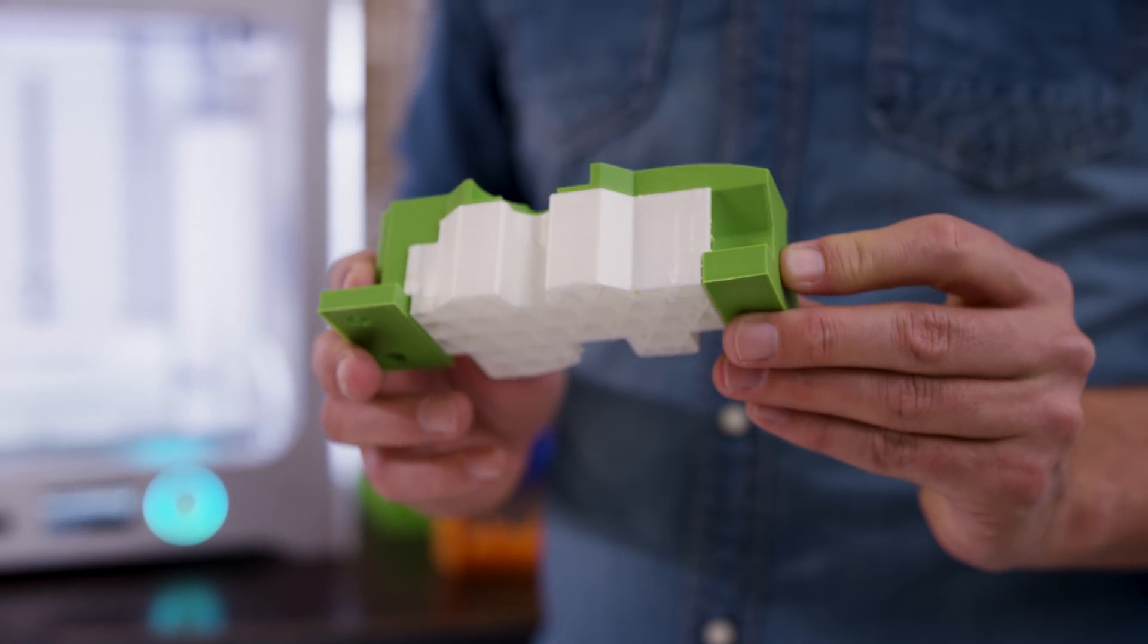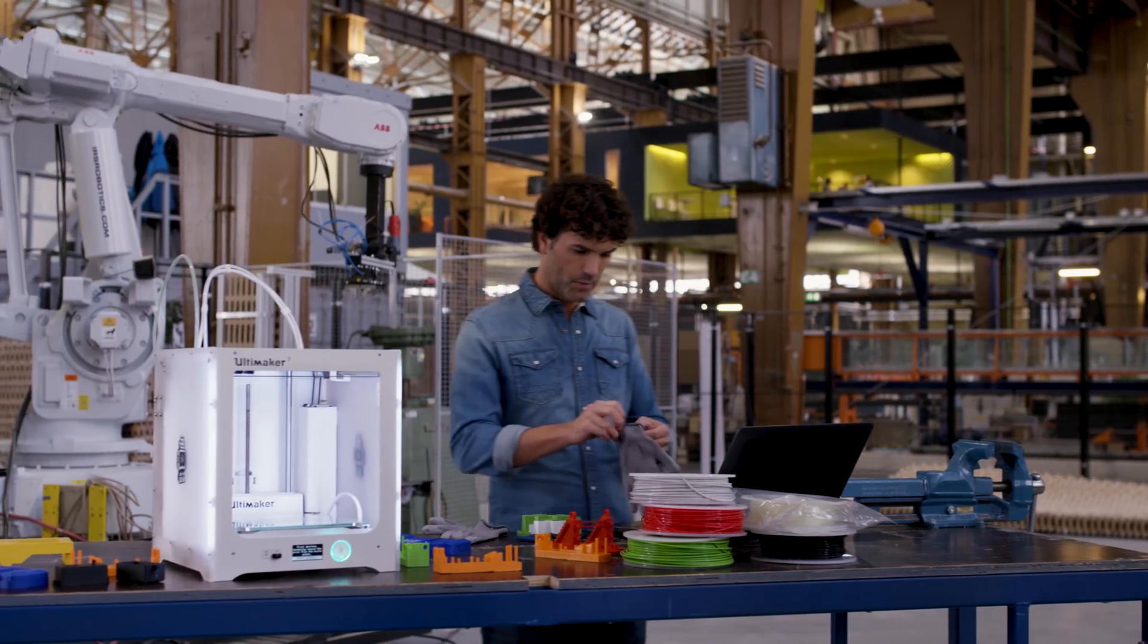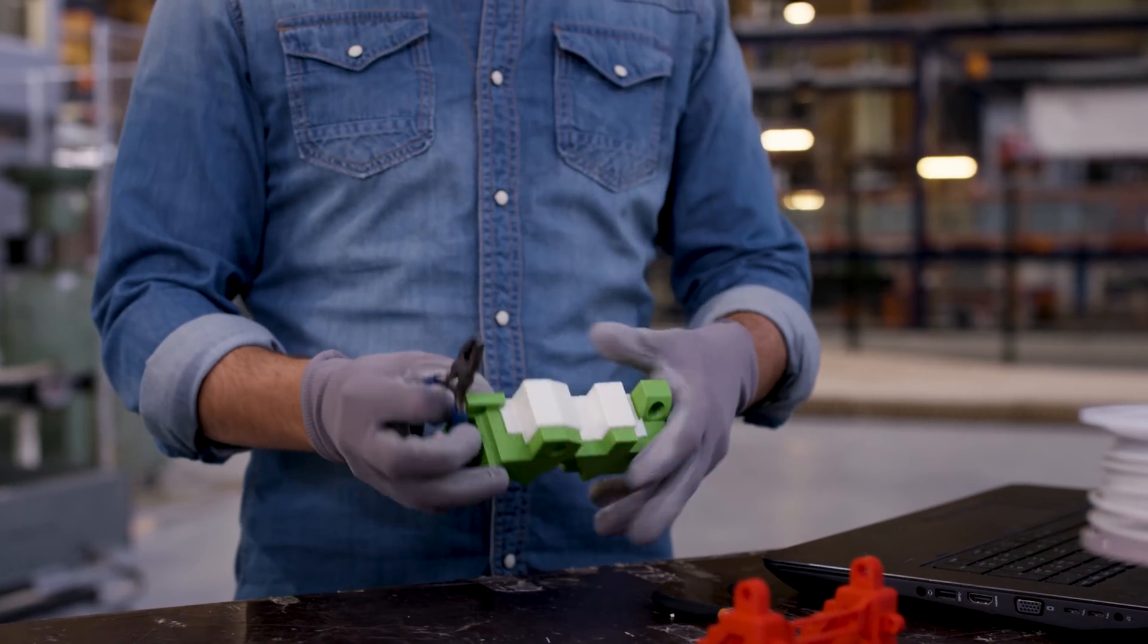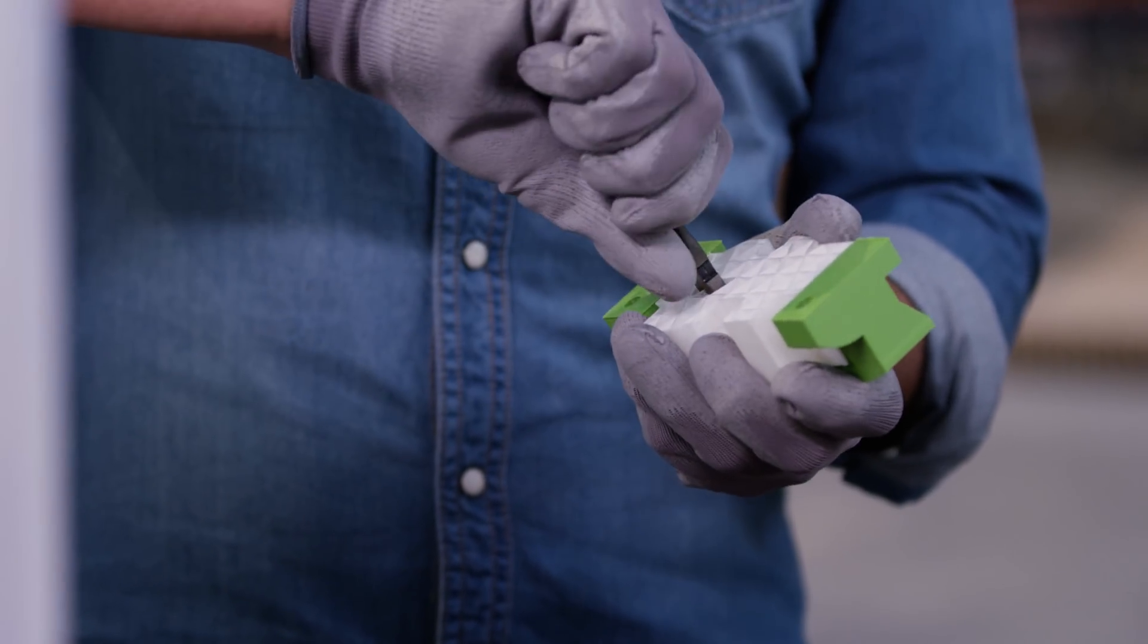When your model has finished printing, remove the support material on the inside by grabbing it with gripping pliers and breaking it away.